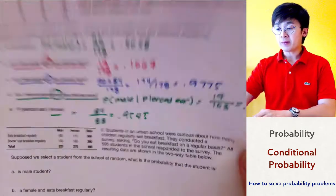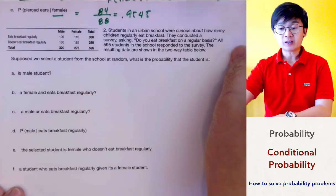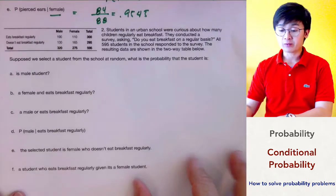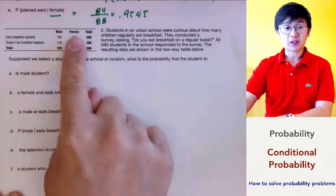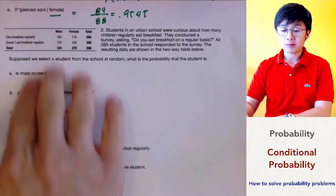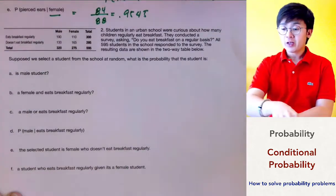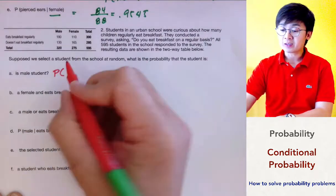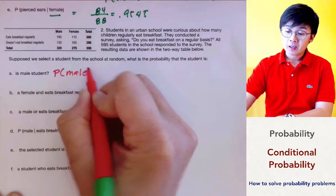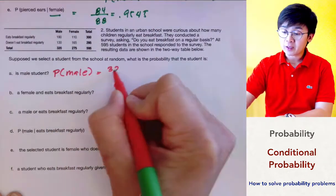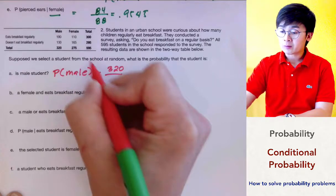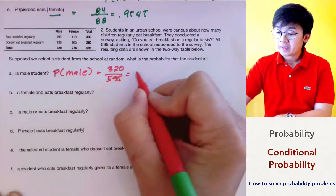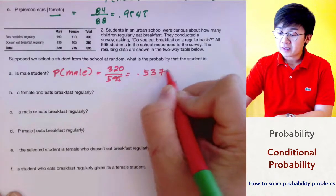For the second experiment, we are given students who eat breakfast regularly and don't eat breakfast regularly. They asked male and female students here again, and we're going to be answering these probabilities based on the table. For the first probability, what's the probability that the student selected is a male? The total number of male students is 320 divided by the total number of students in the survey, which is 595, and it's equal to 0.5378.